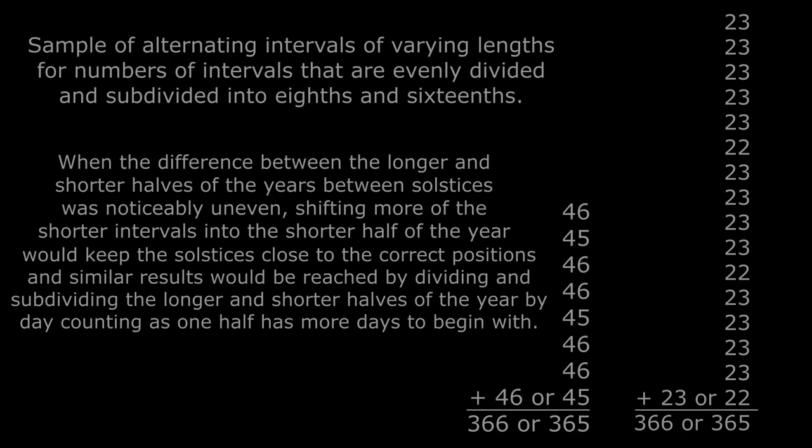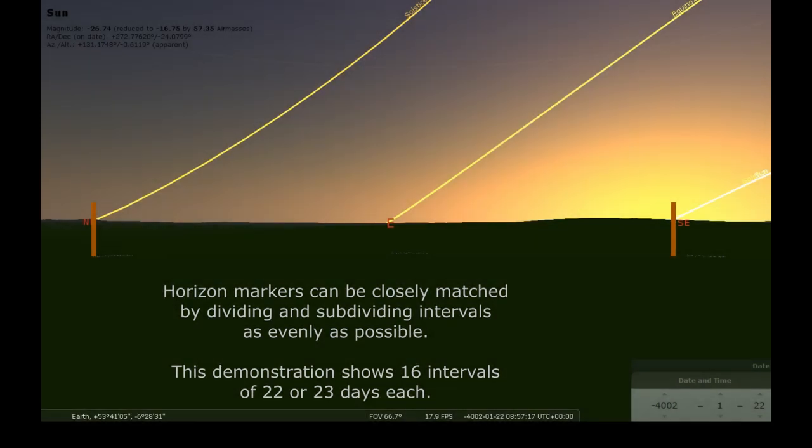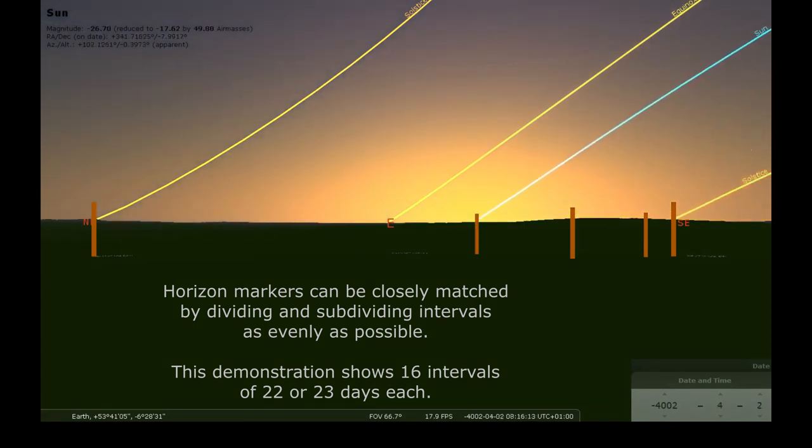If people at this time were attempting to divide the halves of the year between solstices into smaller intervals of slightly different lengths, they would have to assign more of the shorter intervals into the shorter half of the year. This would also naturally happen if both solstices were roughly determined and the unequal days between them were divided and subdivided. If the position of the Sun at these interval divisions was marked on the horizon, the Sun would pass through all of them twice over the course of the year, stopping and turning once at the solstice positions on either end.